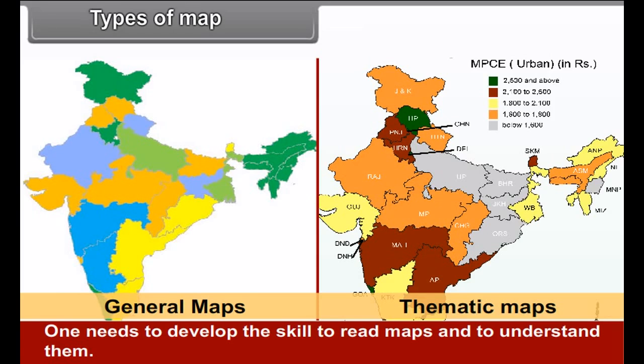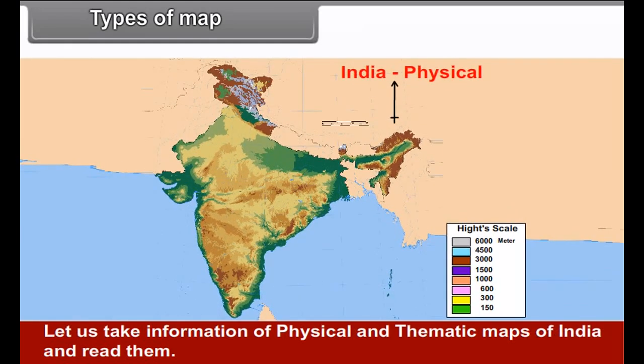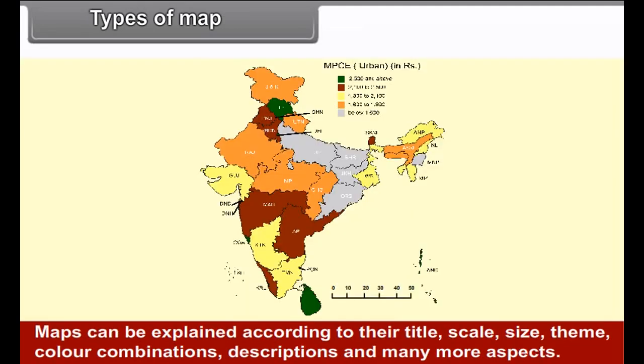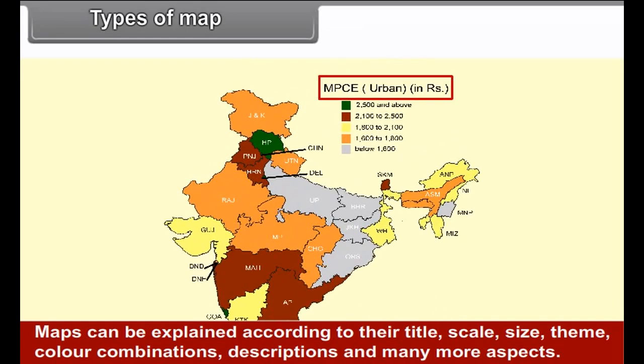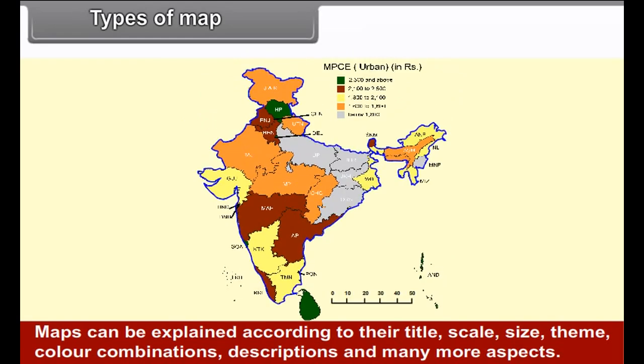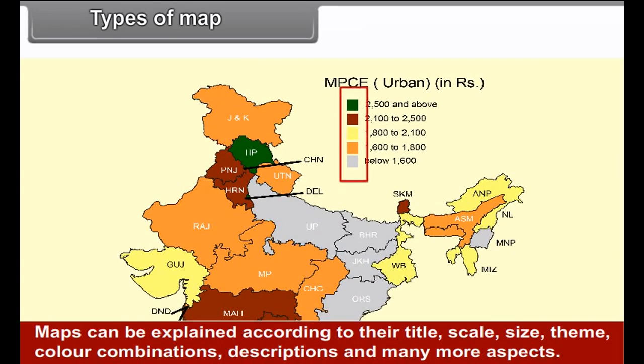Maps are basically divided into general and thematic maps. One needs to develop the skill to read maps and to understand them. Let us take information of physical and thematic maps of India and read them. In the previous class, you have learned the types of maps. This year, let us learn to read, understand and explain them.